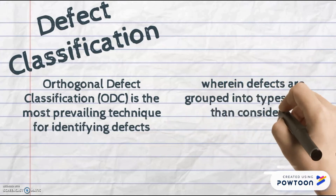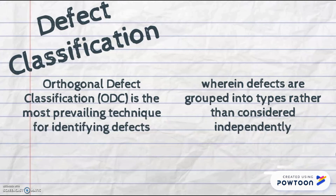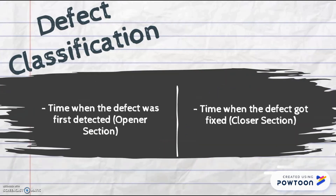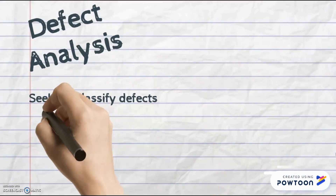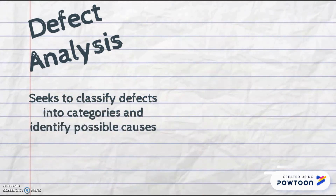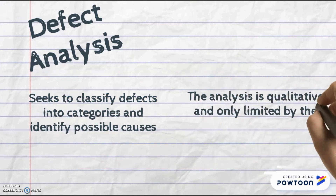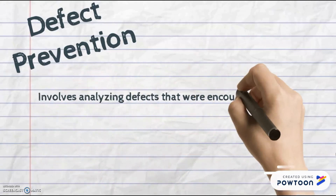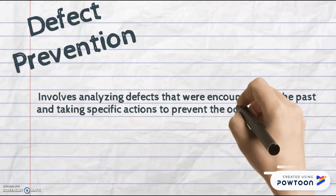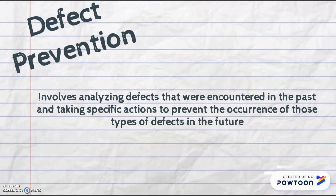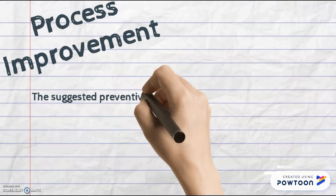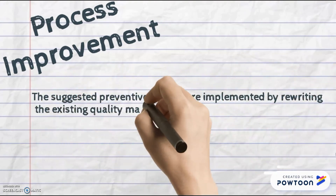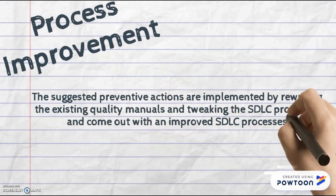ODC classifies defects at two different points in time. For small and medium projects, in order to save time and effort, defects can be classified up to the first level of ODC, while large projects need defects to be classified more deeply in order to analyze and understand them. The third phase is defect analysis, which seeks to classify defects into categories and identify possible causes in order to direct process improvement efforts. The goal of root cause analysis is to identify the root cause of defects and initiate action so that the source of defects is eliminated. The fourth phase is defect prevention, whose purpose is to identify the cause of defects and prevent them from reoccurring. The fifth and final phase is process improvement, which suggests that preventive actions are implemented by rewriting existing quality manuals and tweaking the SDLC process to produce an improved SDLC process and documents.